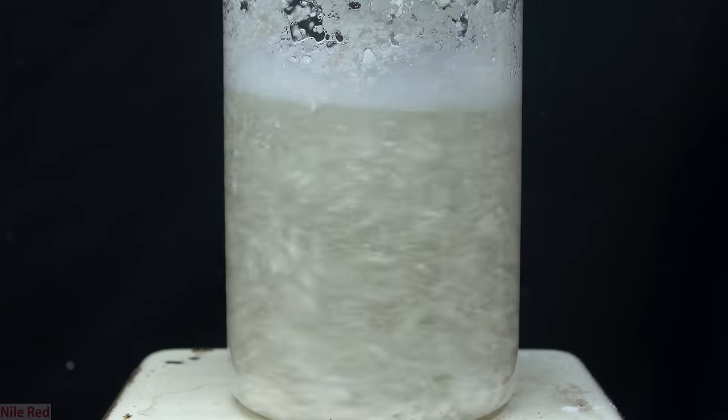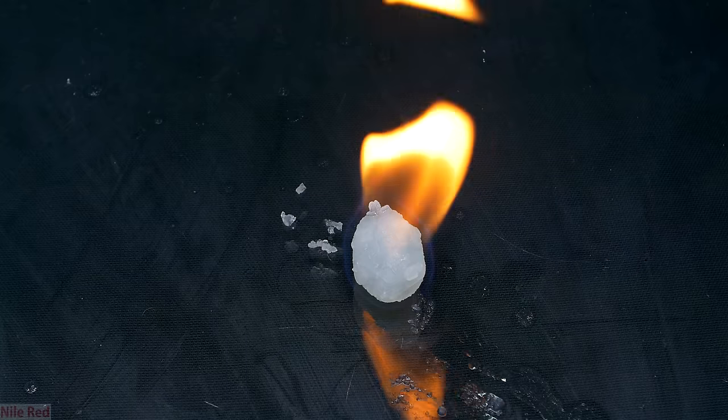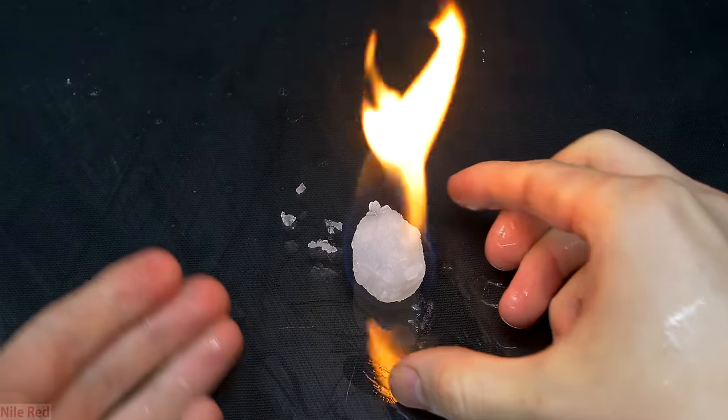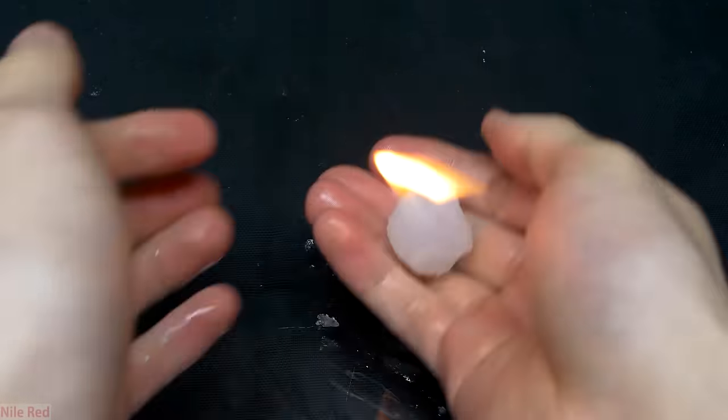Hey guys, so we're finally getting around to making the calcium acetate that I've been promising for a while now. The calcium acetate that we make here is going to be used to make acetone, and it's also going to be used to make flammable jelly.